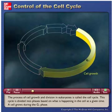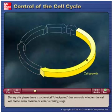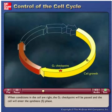A cell grows during the G1 phase. During this phase, there is a chemical checkpoint that controls whether the cell will divide, delay division, or enter a resting stage. When conditions in the cell are right, the G1 checkpoint will be passed and the cell will enter the synthesis phase.